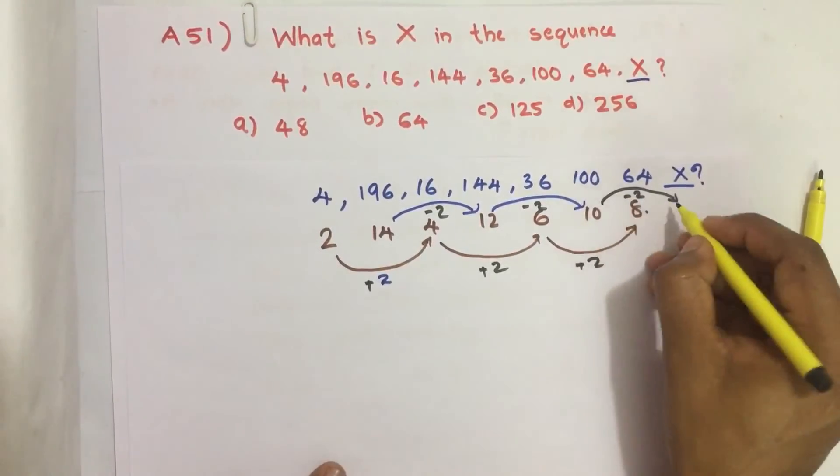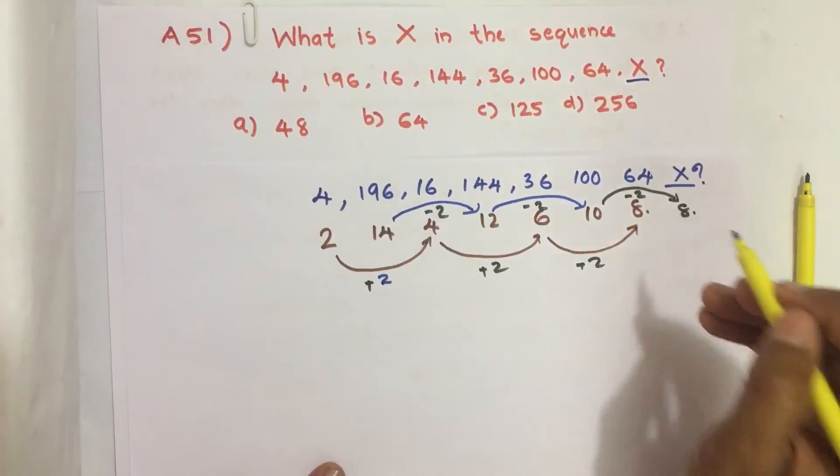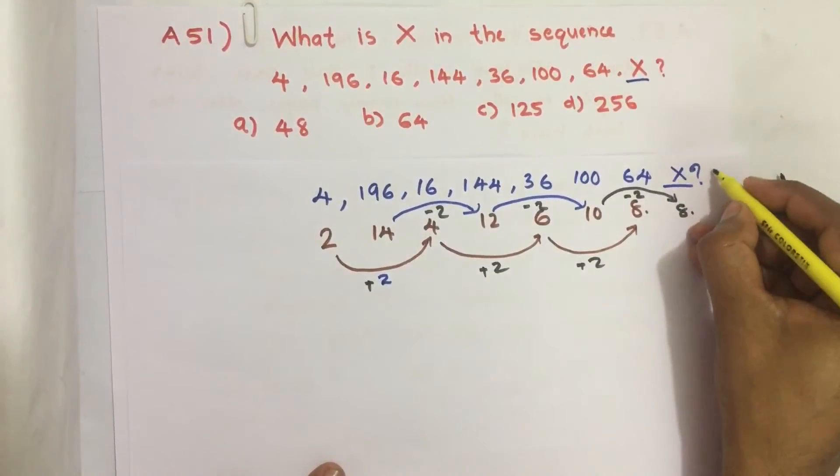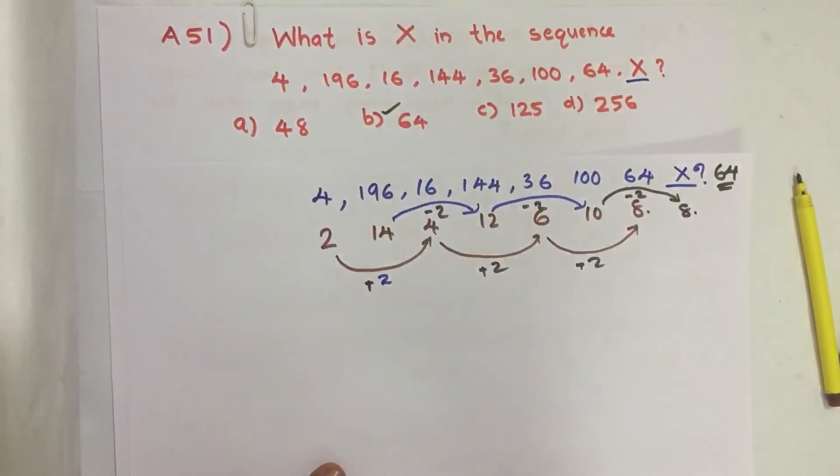So 8, and 8 squared is 64. Therefore our answer is B, 64.